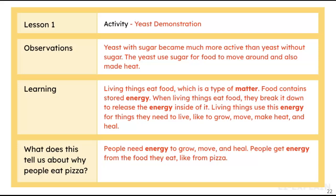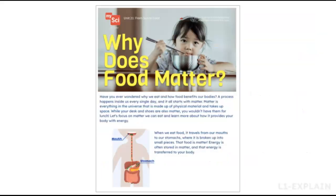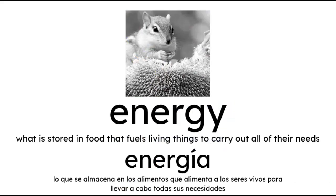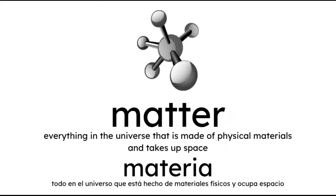From the discussion, students should understand that people need energy to grow, move, and heal, and that people get energy from the food they eat, like pizza. You will have students read Why Does Food Matter to learn more about how living things get matter and energy. You can post and discuss the energy and matter vocabulary cards. Remember to collect data for the sprouter investigation during the Elaborate portion.